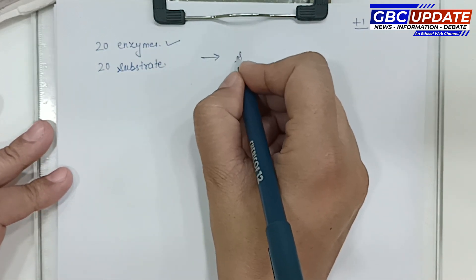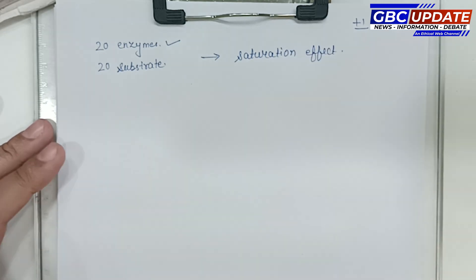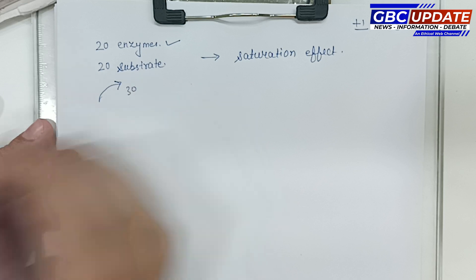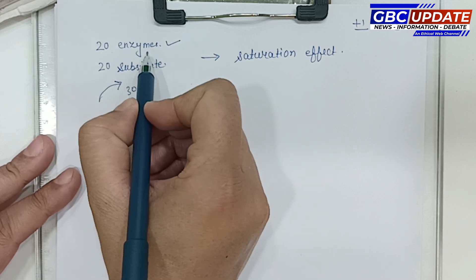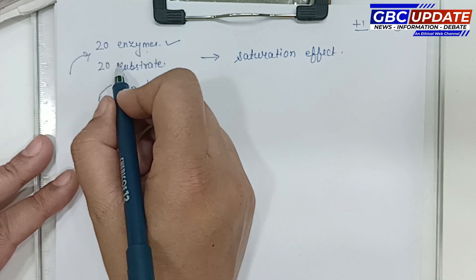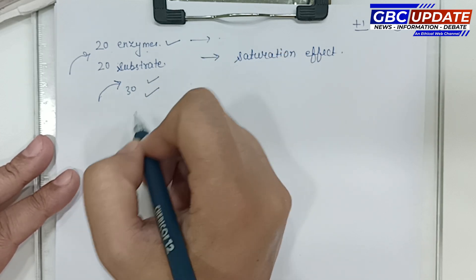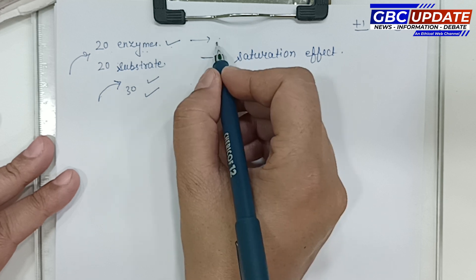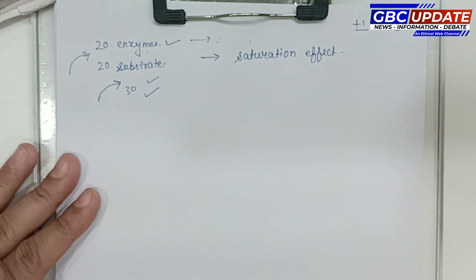This is known as the saturation effect. After saturation, if we increase the substrate from 20 to 30 but enzymes are limited, the reaction rate will not increase. However, if we also increase the enzyme concentration along with the substrate, then the reaction rate will start to increase again.